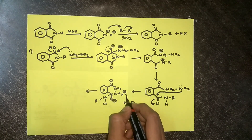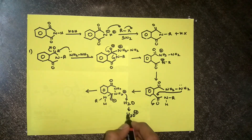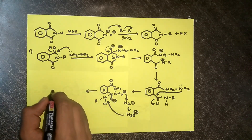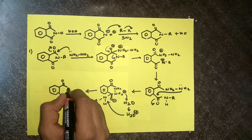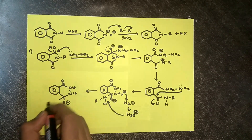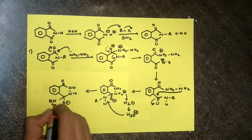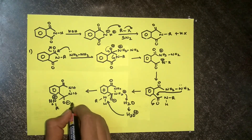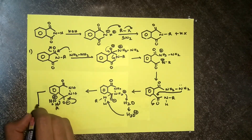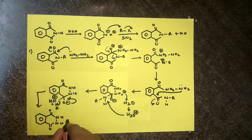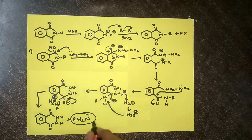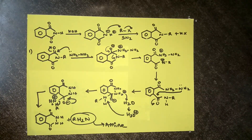This water molecule is going to extract a proton from here and become H3O+, and this is going to deliver it to this thing, forming NH-NH2-R+. Now this negative charge is going to reform the bond and expel the R-NH2 group. This forms the amine, plus R-NH2. And this compound is called phthalimide hydrazide.